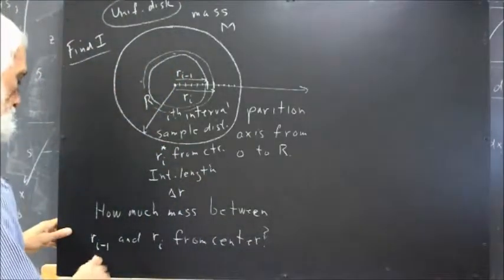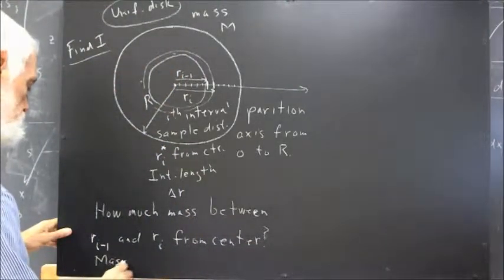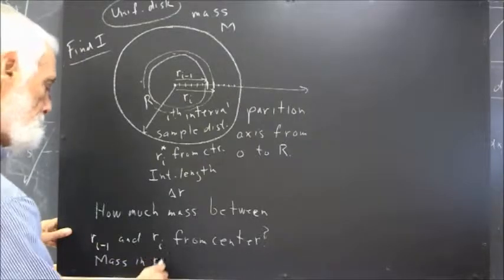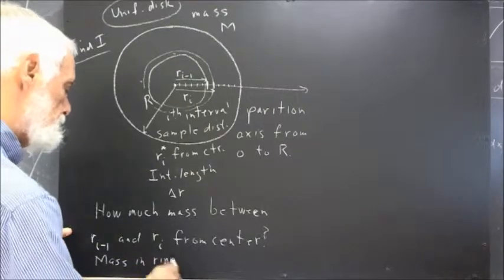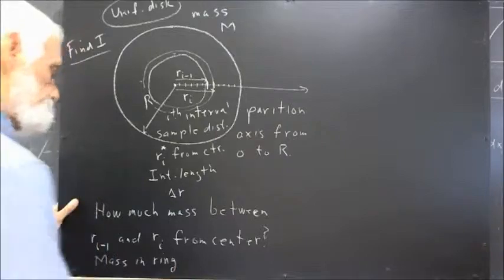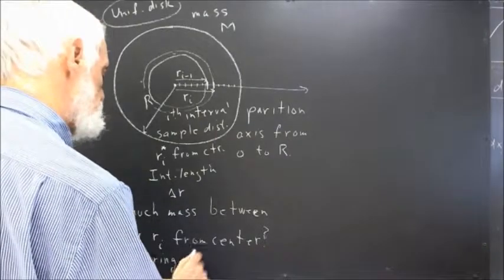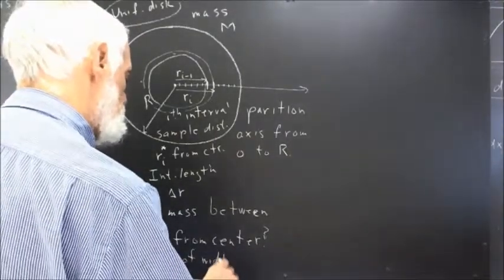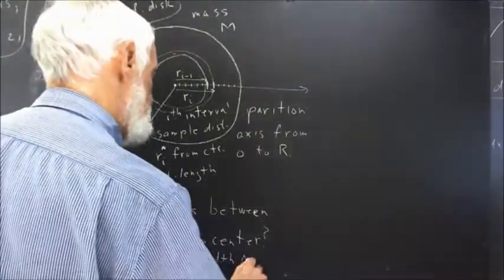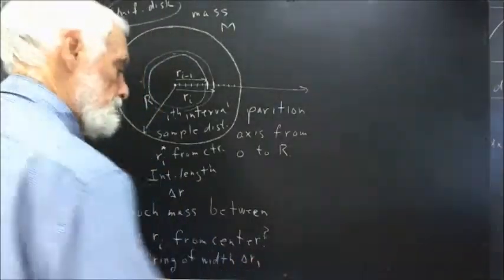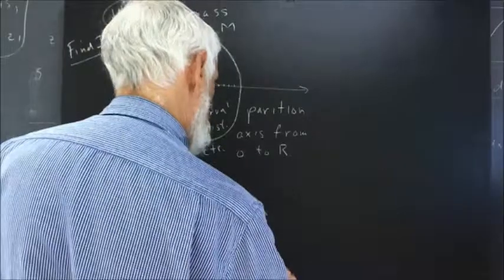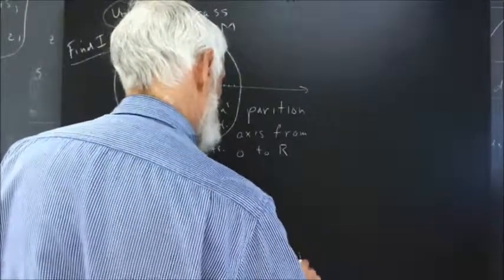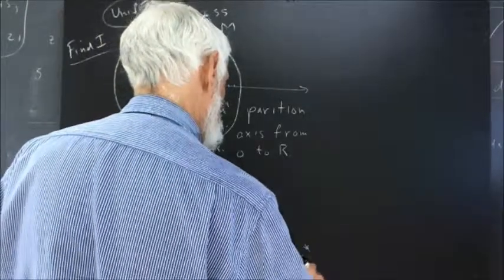So, this is the mass in a ring. We'll say of the width, delta R, radius R star.